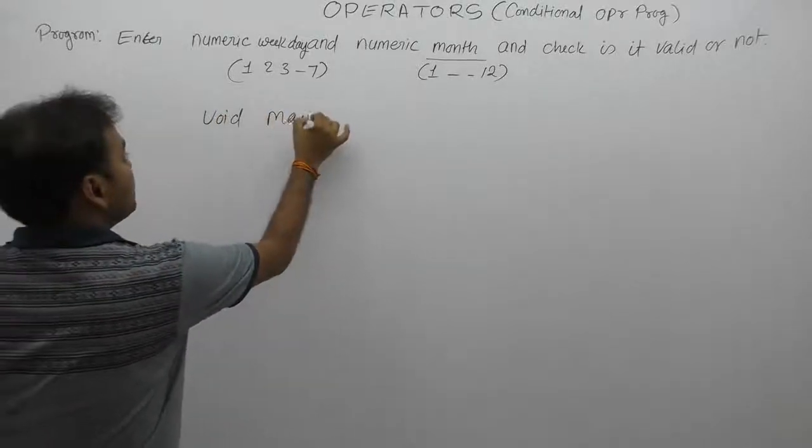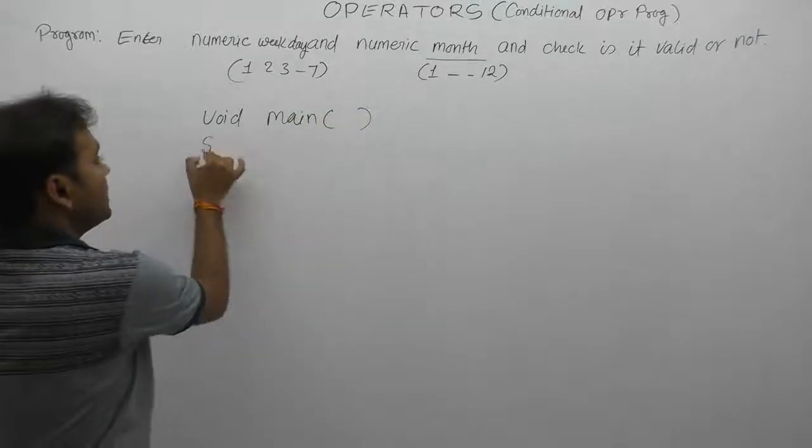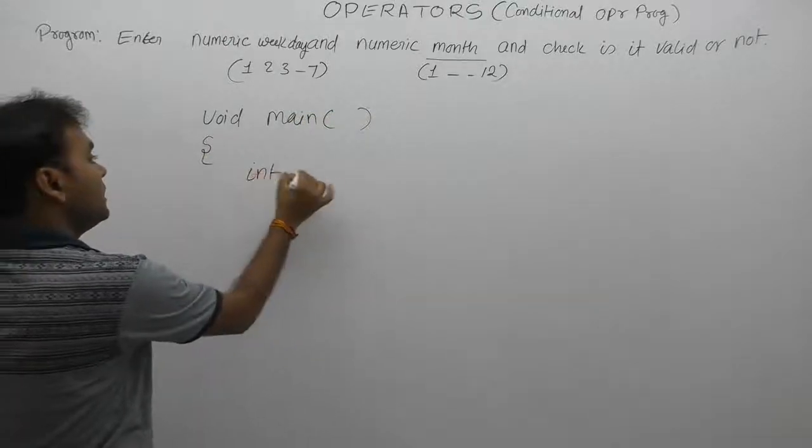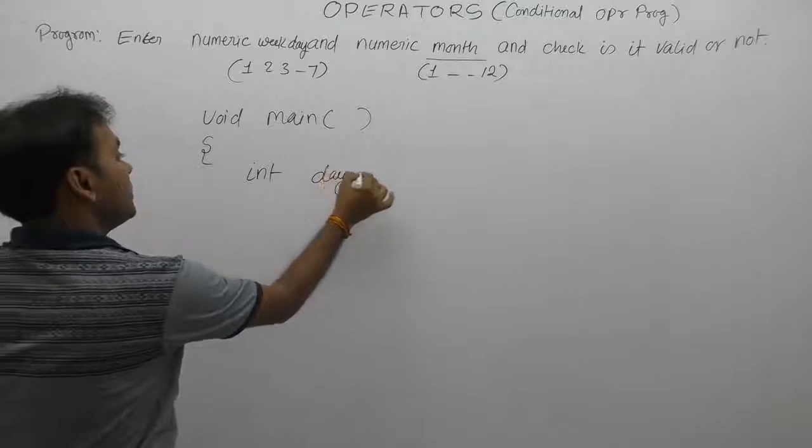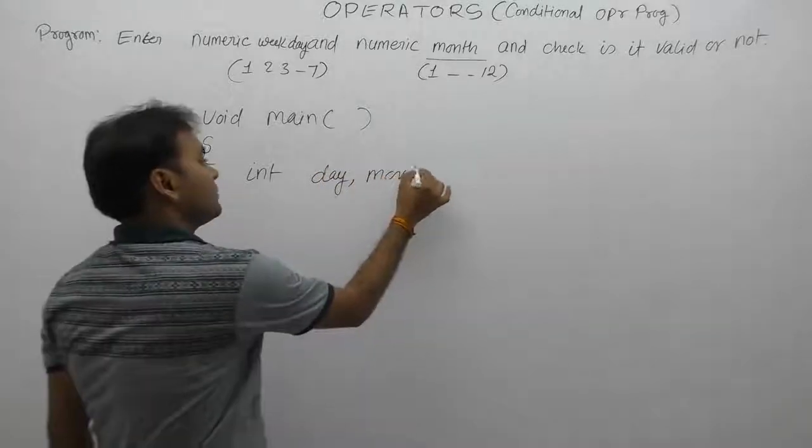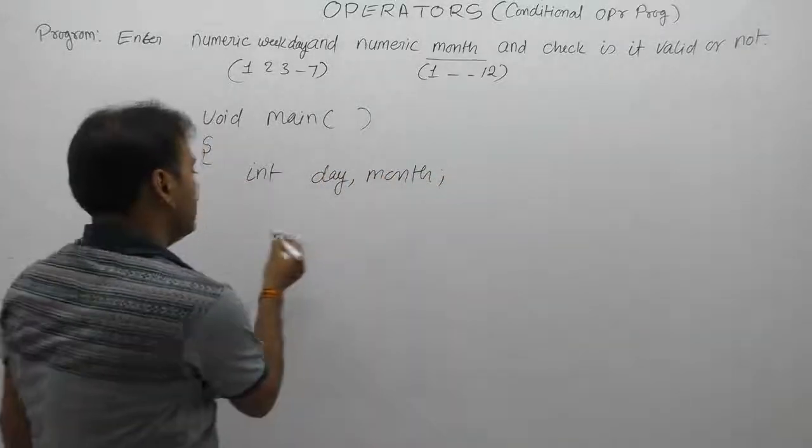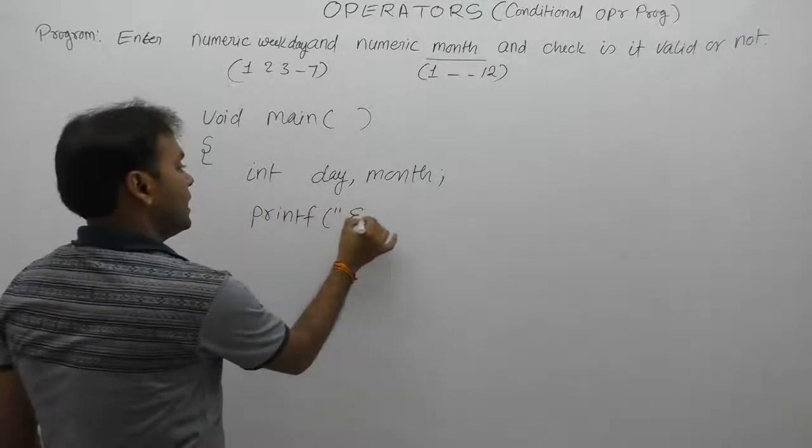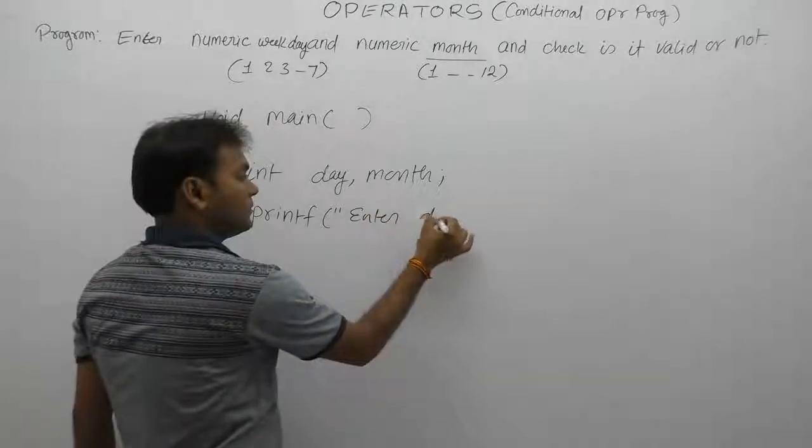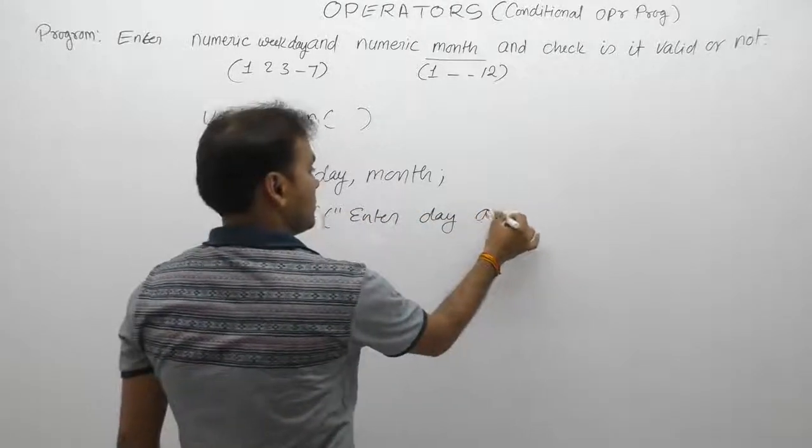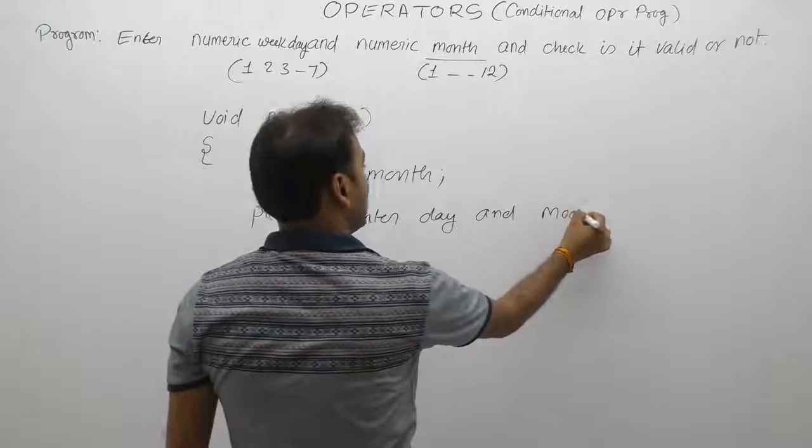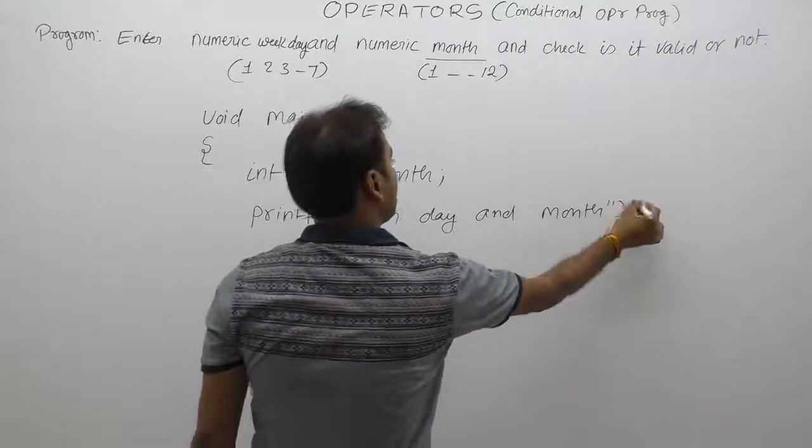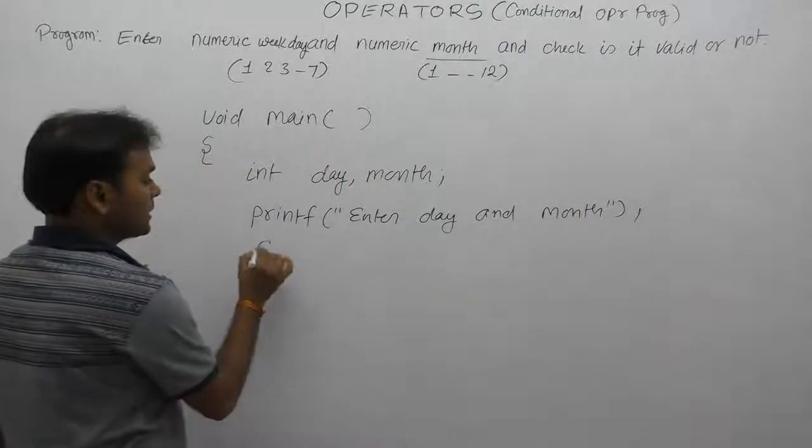Void main - simply declaring required variables: integer day and month. Then reading inputs using printf - 'Enter day and month'. Enter day and month in numeric format using scanf.